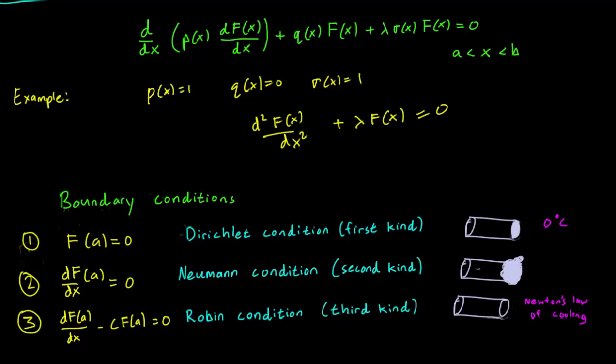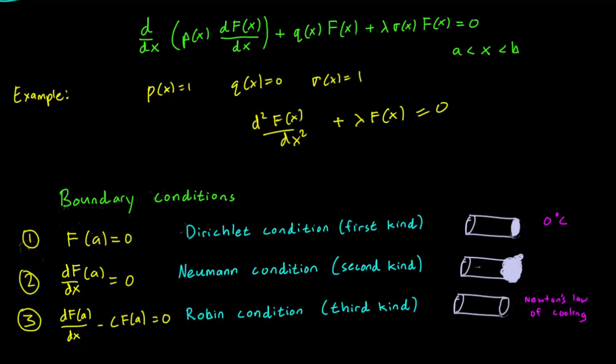There is a third type of boundary condition that we have not seen. It is known as the Robin condition, and it appears when we have the derivative of the function equal to a constant times the function itself at one of the boundary points. This boundary condition, when applied to the one-dimensional heat equation, describes what physicists call Newton's law of cooling. We will talk a bit about that in class.